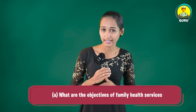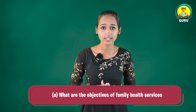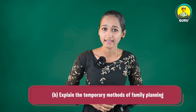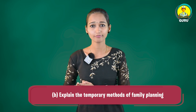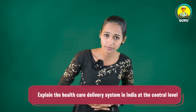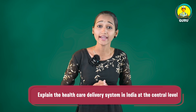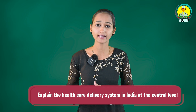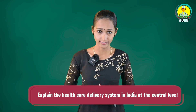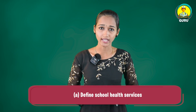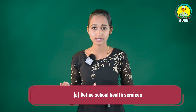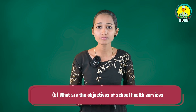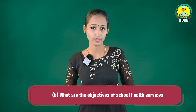B. Explain the steps to be followed in the investigation of an epidemic. Next question: A. What are the objectives of family health services? B. Explain the temporary method of family planning. Next question: Explain the health care delivery system in India at the central level. Next question: A. Define school health services. B. What are the objectives of school health services?